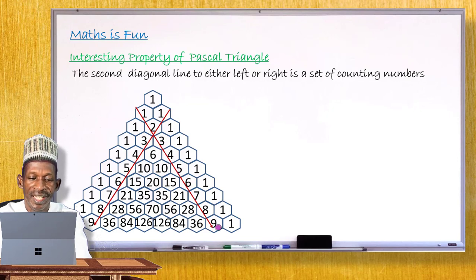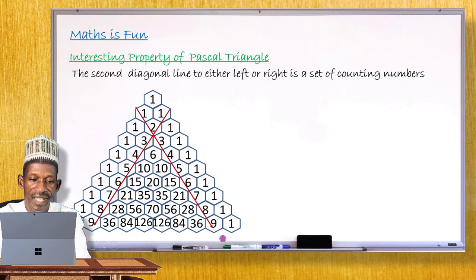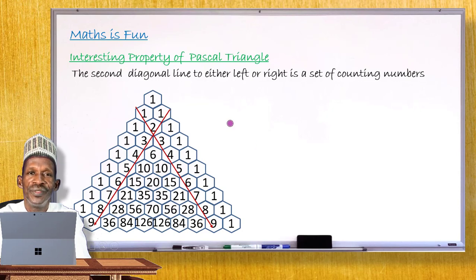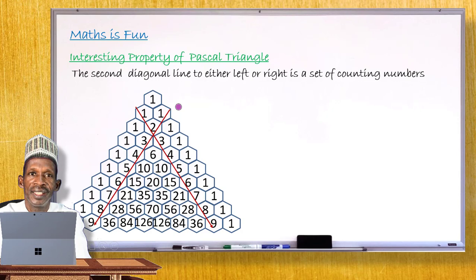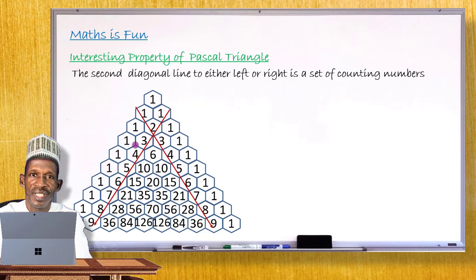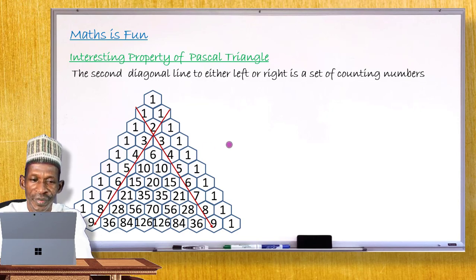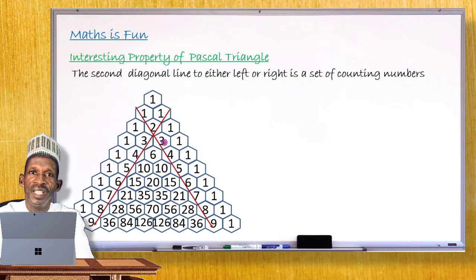This line contains entries that are exactly the counting numbers: 1, 2, 3, 4, 5, 6, 7, 8, 9. If we continue with more rows, the next number would be 10. You may have seen Pascal's Triangle before but never noticed this second diagonal containing exactly the counting numbers. Pascal's Triangle is amazing — we'll see more of its interesting properties in our next lesson. Thank you for your attention.